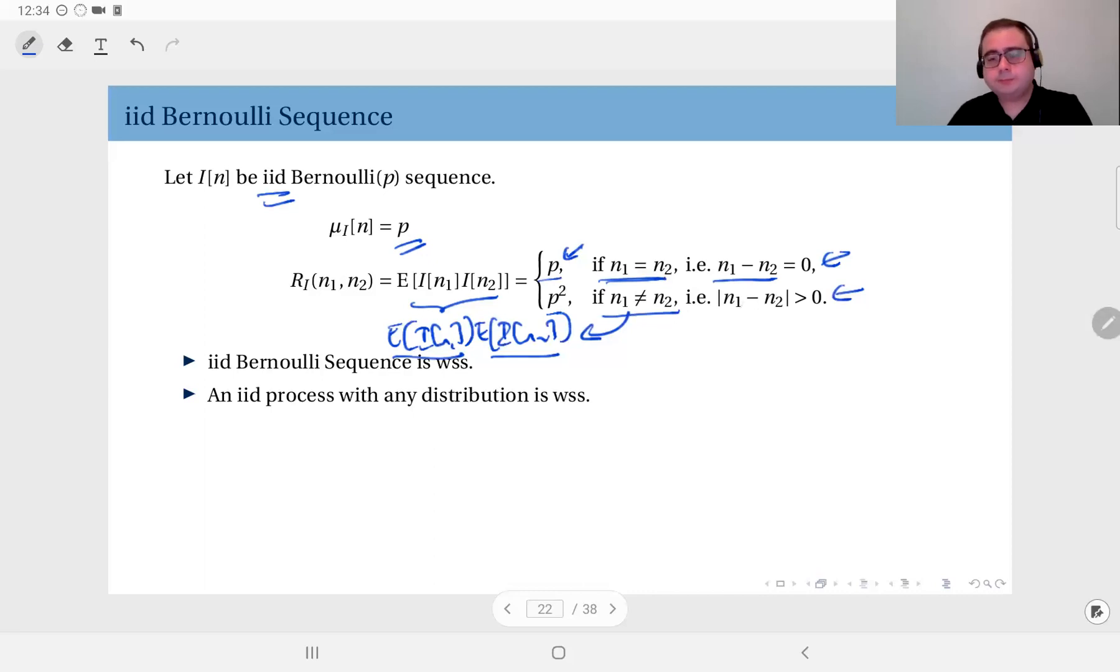Therefore, you see, the autocorrelation depends not on N1 and N2 separately, but it depends on their difference. Is it 0 or not. Therefore, we say that since the mean is independent of time and the autocorrelation depends only on N1 minus N2, not on N1 and N2 separately, we say that IID Bernoulli sequence is wide sense stationary.